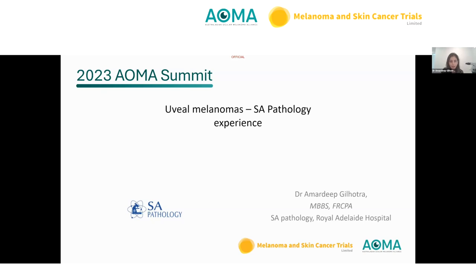Enucleation specimens are larger; fresh tumour is sampled for cytogenetics via scleral incision at the time of handling, in a way that does not compromise assessment of optic nerve or ciliary body invasion. In some cases where the tumour is small, ICC-coated glass slides are used. For a recent specimen — a recurrence of melanoma post-plaque insertion close to the optic nerve — the entire sample was submitted for formalin fixation, paraffin embedded, and 10-micron thick sections were cut and submitted for cytogenetic analysis.